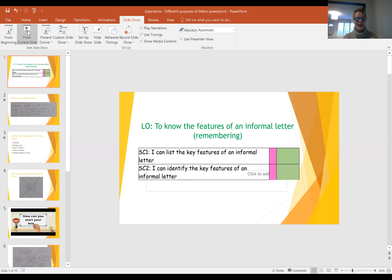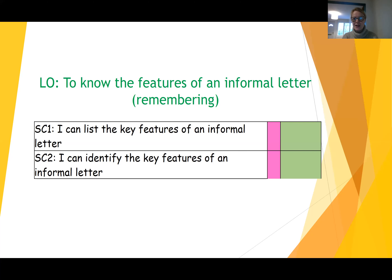This is our English section and we are learning about a different type of writing — we are learning about letters. I'm going to share my screen with you so we can see our learning objective for today. We need to learn to write letters in different ways so we can write to our new friends in Australia and tell them all about what it's like to live where we live. So today we're going to look at informal letters. The learning objective is to know the features of an informal letter and we're still in our remembering stage.